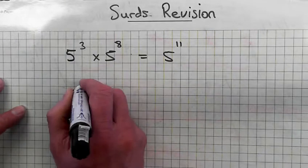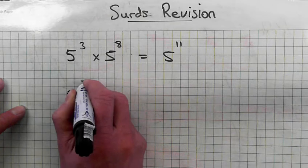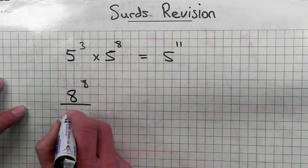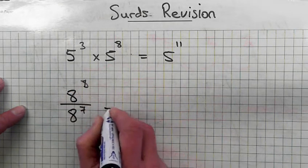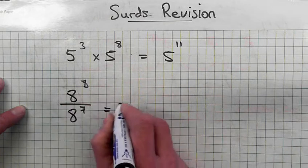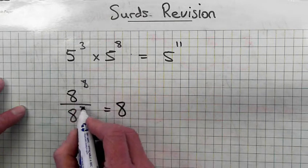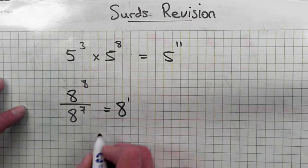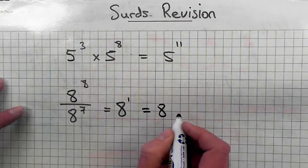Another law of surds. If you're dividing, write that down as eight over eight to the power of seven. That's the base. You subtract the powers. Eight minus seven — eight to the power of one — is equal to eight.